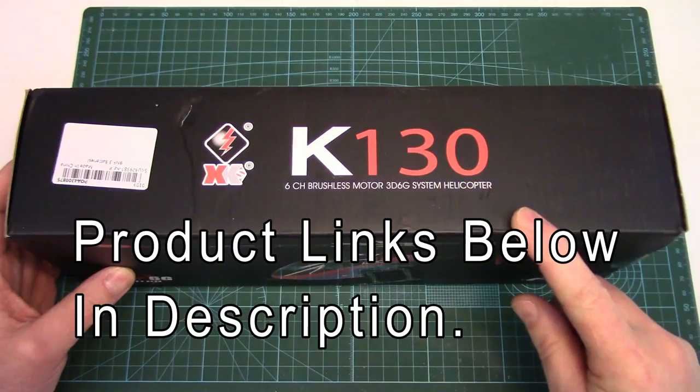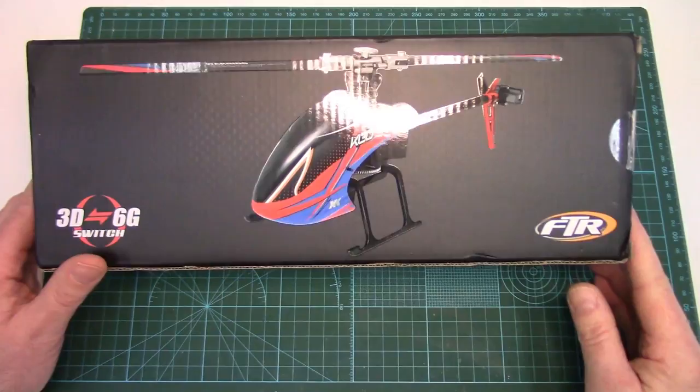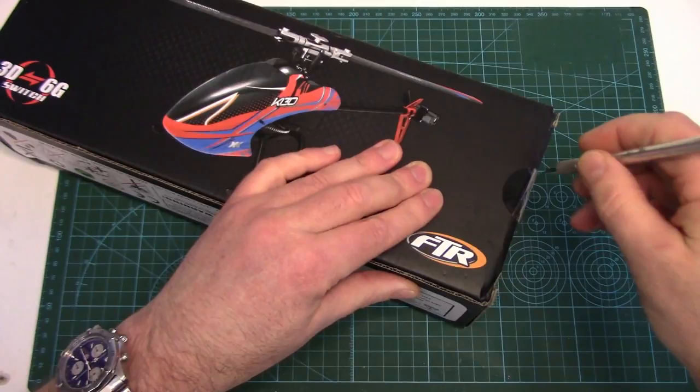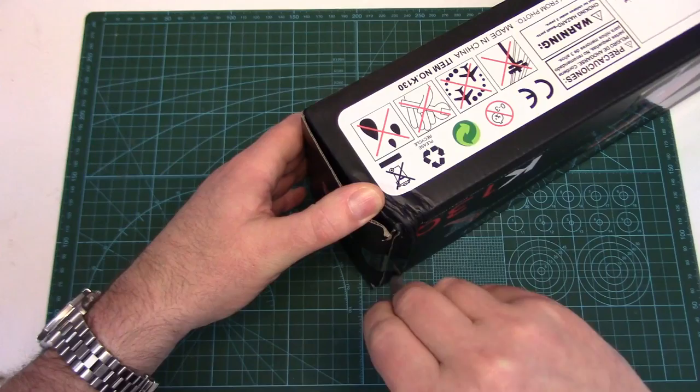This is the XK K130. This is XK's highest performance micro collective pitch in their lineup. It's 2S powered, full metal head, all the good stuff. So this is going to be quite a bit different from the K123 and K124 that I had done a review on several months back.